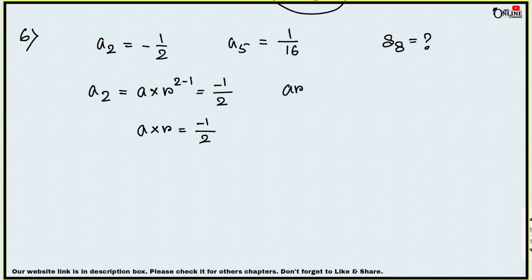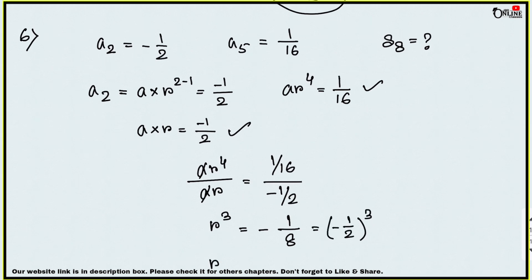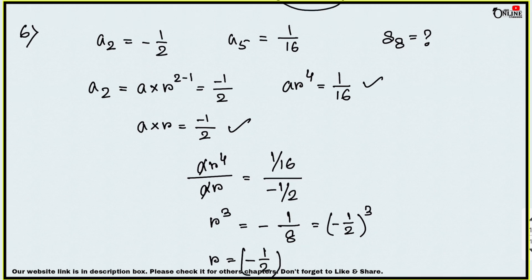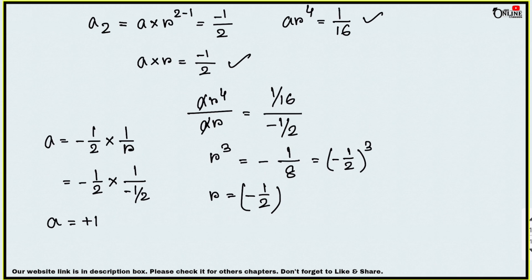Dividing a5 by a2: (a·r⁴)/(a·r) = (1/16)/(−1/2). The a's cancel, giving r³ = −1/8 = (−1/2)³, so r = −1/2. Since |r| < 1, substituting back: a·(−1/2) = −1/2, therefore a = 1.